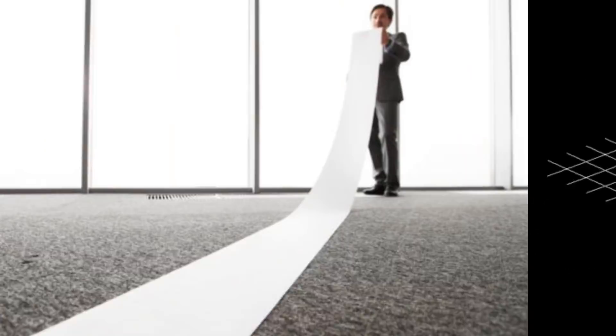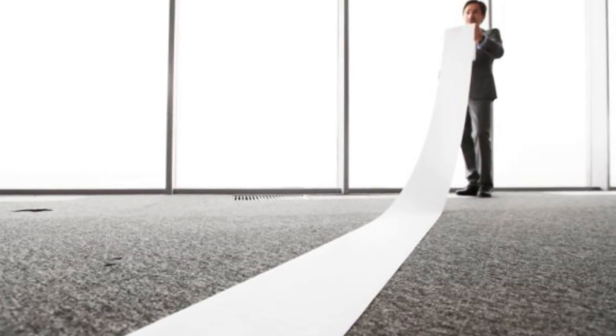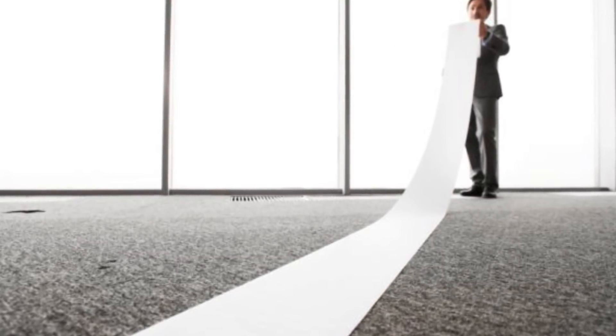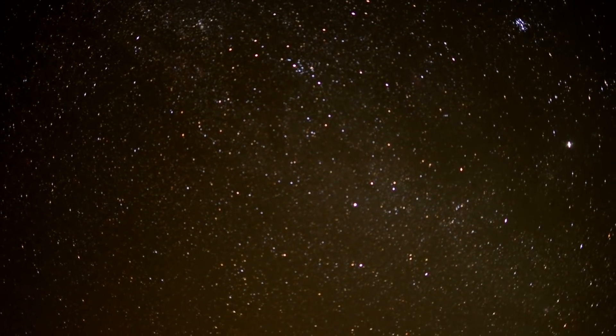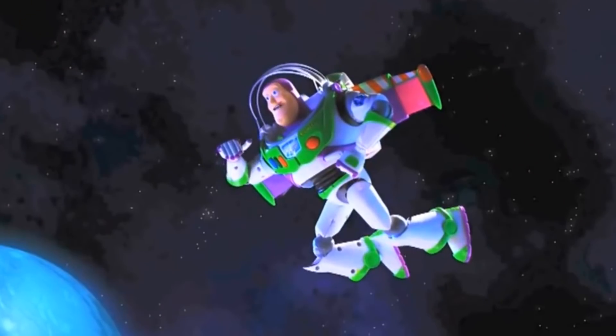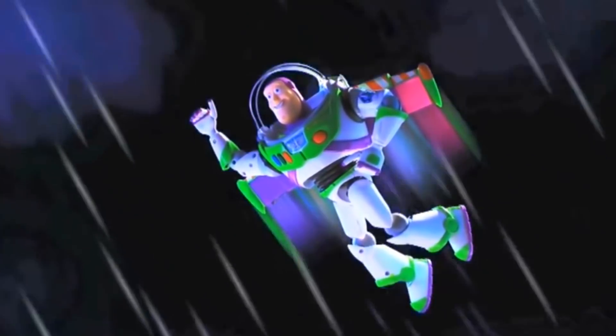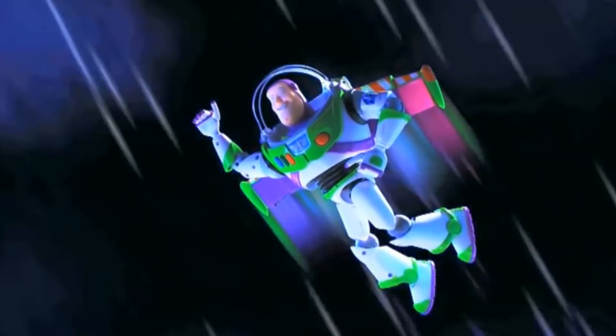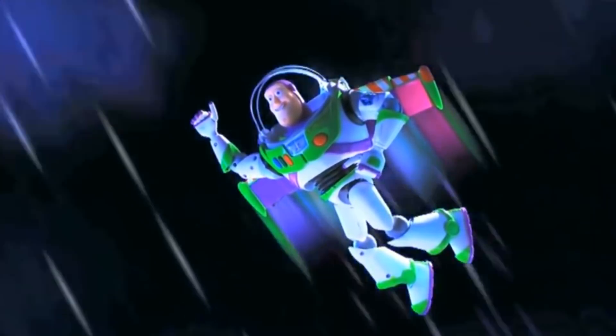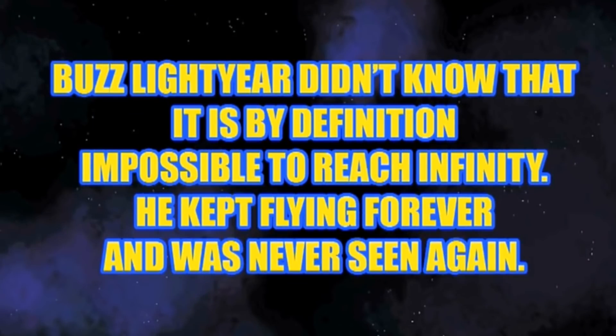To demonstrate this, imagine the universe as a flat piece of paper that expands forever. This could be seen as the infinite model, where it can continue to expand infinitely and has no definite end. However, if we were to imagine folding the paper into a cylinder, then joining the ends of the cylinder, we would have a flat, finite universe in a torus or donut shape.